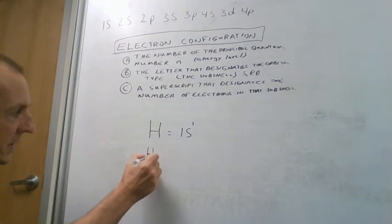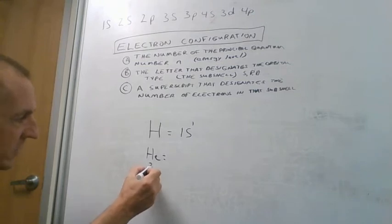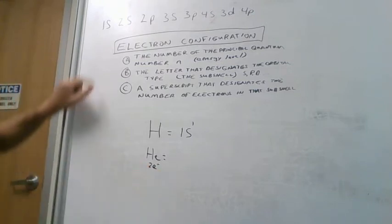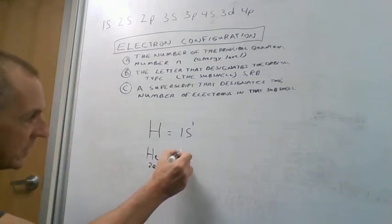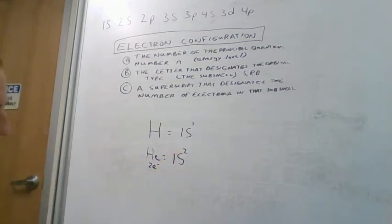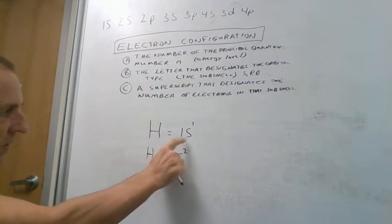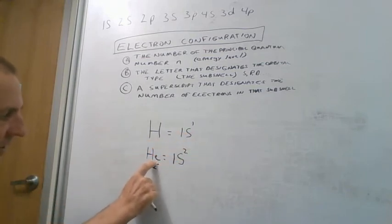So if we moved on to helium, which is the next element in our periodic table, it has two electrons. So what we have to do is figure out where are those two electrons going to go. And they're going to fill this lowest level first. So we would say they're at the one energy level in an s orbital, and there are two electrons in there. And the way we would read this is the electron configuration for hydrogen is 1s1, the electronic configuration for helium is 1s2.